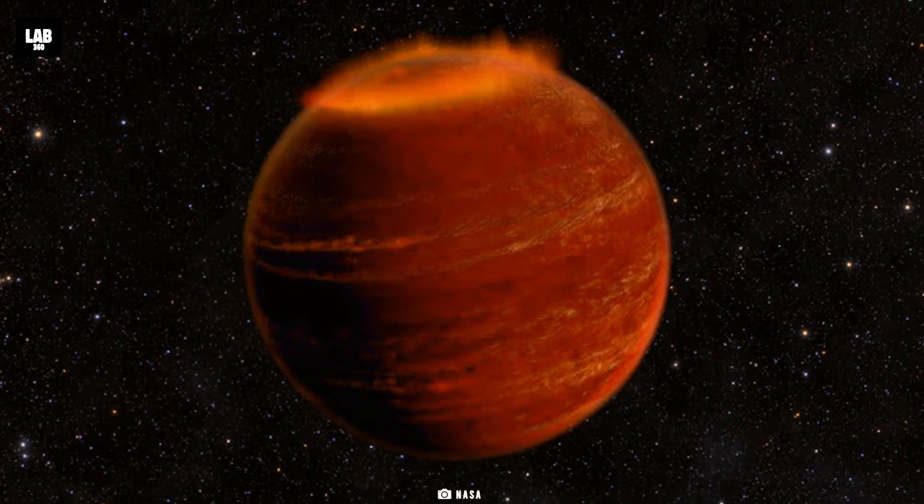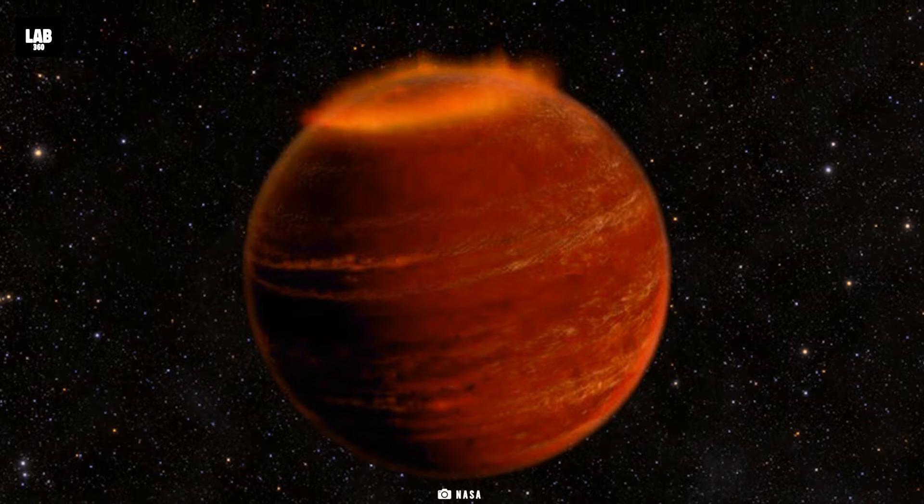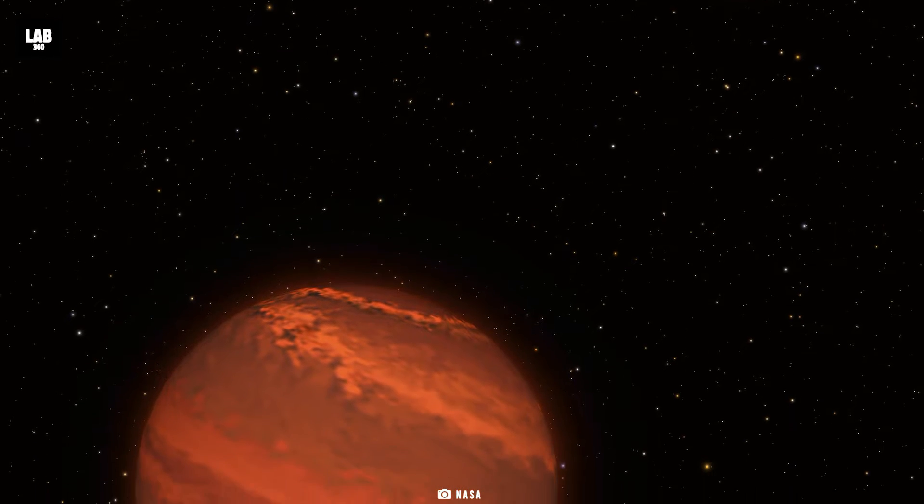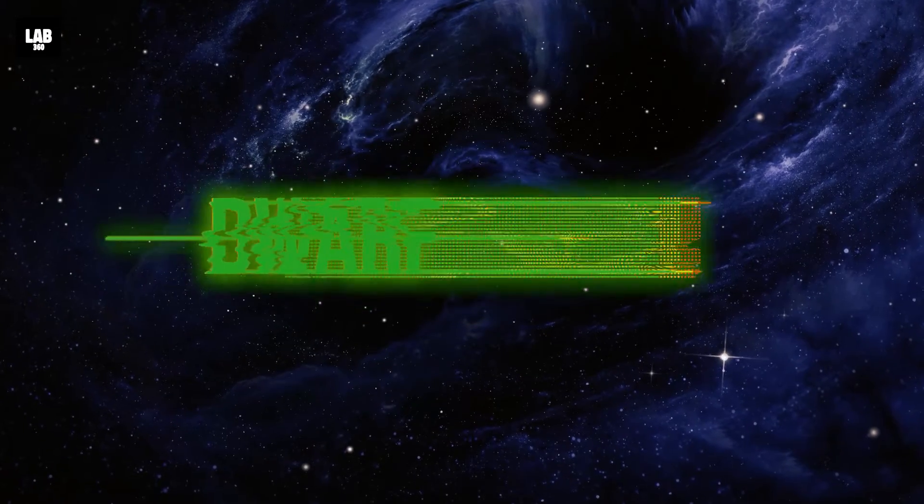So far, the discovery of brown dwarfs has been part of a binary system. It is a system in which two stars orbit around one another.